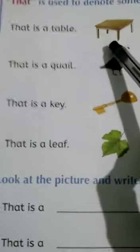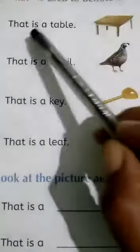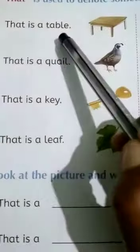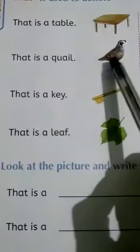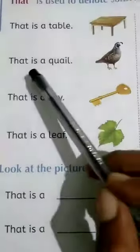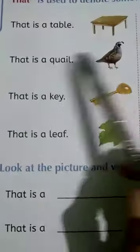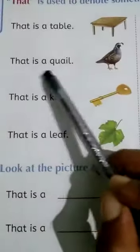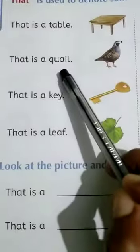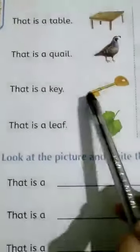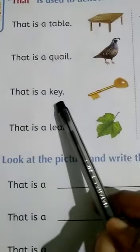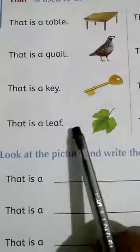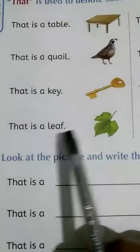Look at your — what is that? That is a table. Look at your, what is that? That is a quill. Next, that is a key. Next, that is a leaf.